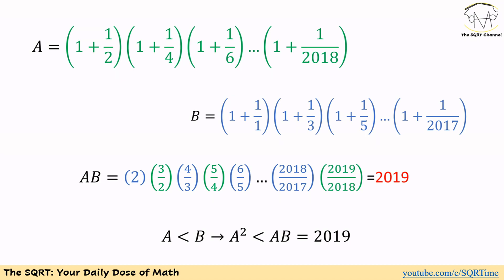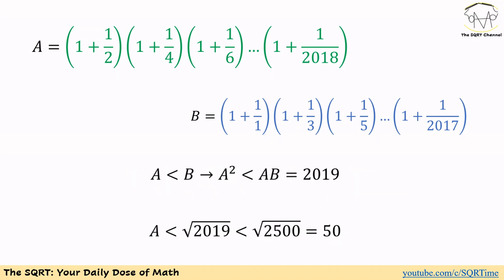Now let's put it all together. We had A is less than B. Multiplying both sides by A (a positive number) gives A squared is less than AB. Since AB equals 2019, we have A squared is less than 2019. Therefore A is less than the square root of 2019, which is less than the square root of 2500, which equals 50. So A is less than 50, and that is our answer — the expression in the problem is less than 50.